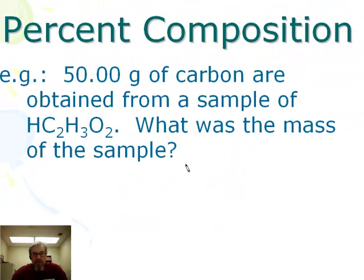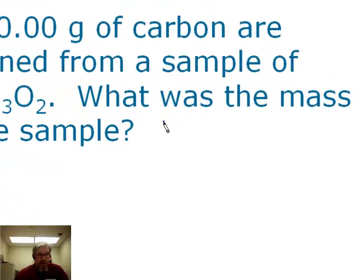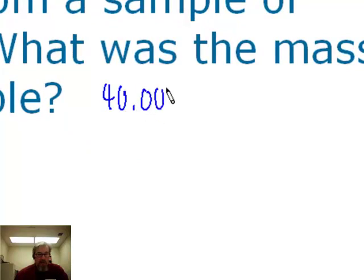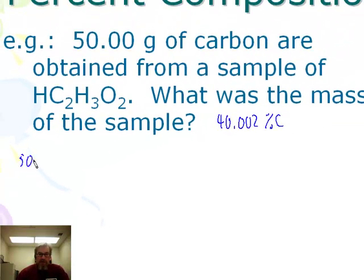Let's try this one using dimensional analysis. The question says 50 grams of carbon are obtained from a sample of acetic acid. What was the mass of the sample? A key piece of information is the percent by mass of carbon in HC₂H₃O₂, which we calculated as 40.002% carbon. In all dimensional analysis problems, we start by writing down the given information: 50.00 grams of carbon.